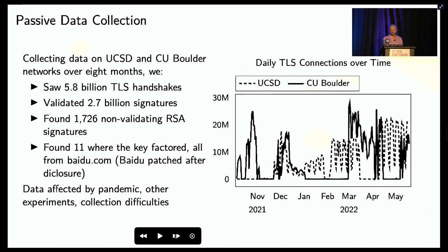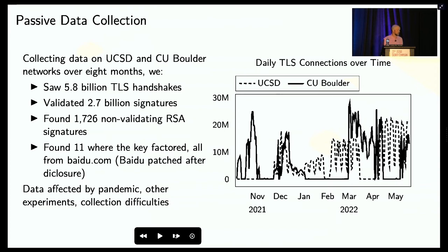After 2015, the data we had access to stopped collecting some of the cryptographic information we needed and stopped collecting failed handshakes — which is what handshakes with faulty signatures should produce. So after 2015 we had less visibility, but from what we could see, it appears these faults continued over this time period and didn't magically reappear in 2022 when we started looking again.